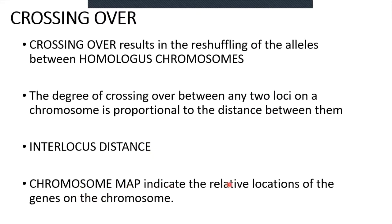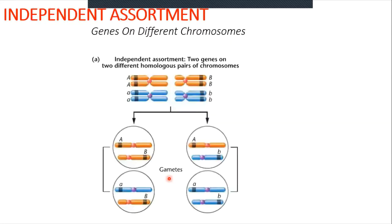A chromosomal map indicates the relative locations of genes on the chromosome. Our key terms here are: crossing over, which we already know; homologous chromosomes, which we already know; and two new terms — interlocus distance, which is the distance between two linked genes on the same chromosome, and chromosomal map, which is the order and positions of genes located on the same chromosome.